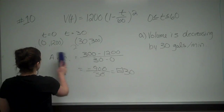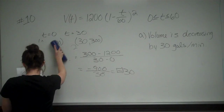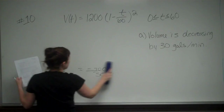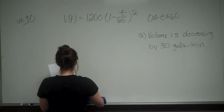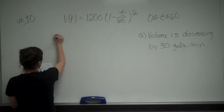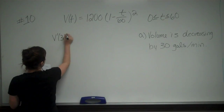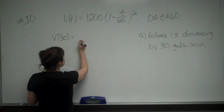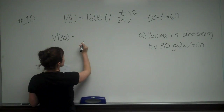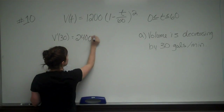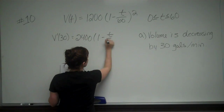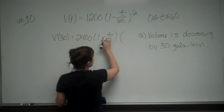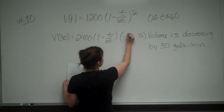Part B wants us to find the rate of change at T equals 30. The rate of change at a point is the derivative, so we're finding V'(30). Applying the power and chain rule: V'(T) equals 2400 times (1 minus T over 60) to the first power, times the derivative of the inside, which is negative 1 over 60.